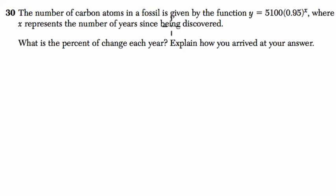Let's start by reading the problem. It says that the number of carbon atoms in a fossil is given by the function y equals 5100, that's our starting value, times 0.95, so 95% for every x, where x is the number of years.